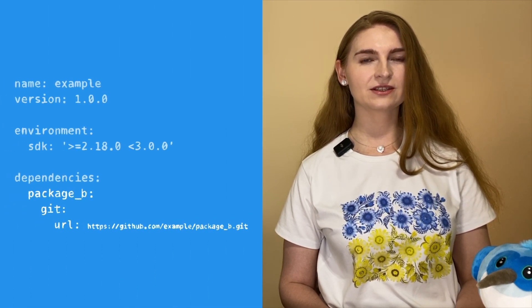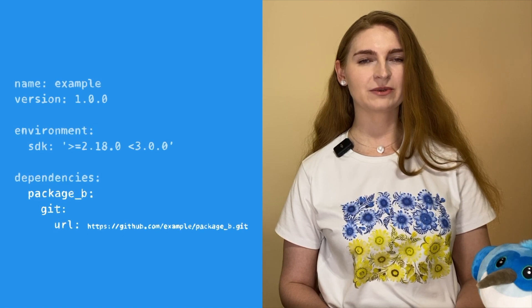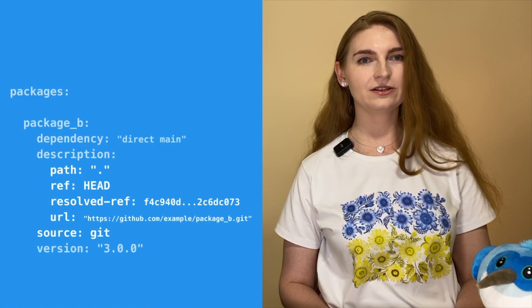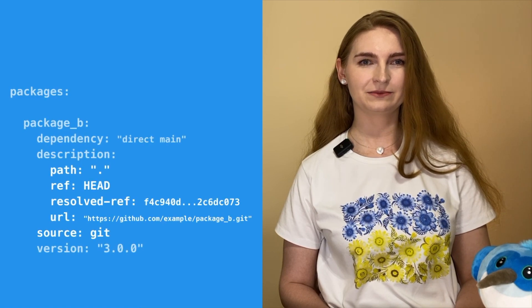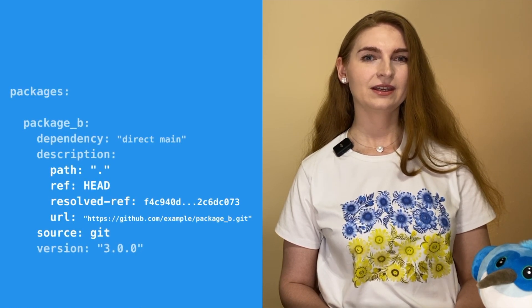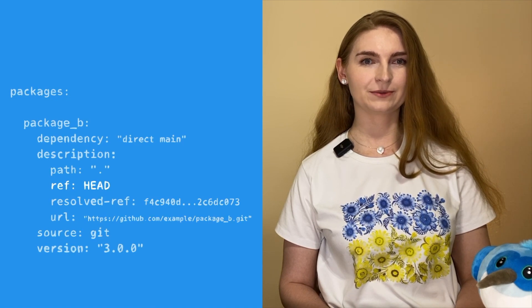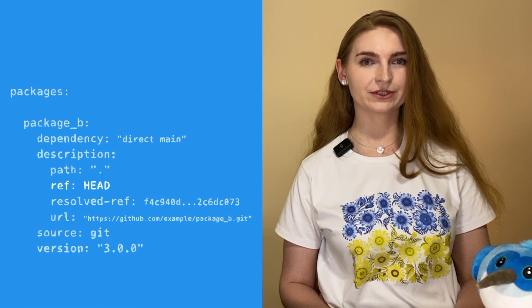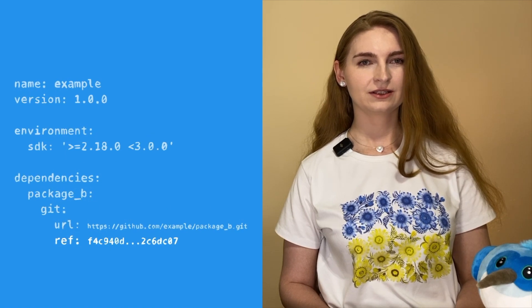Using Git solves the reusability problem — it allows depending on the same package from multiple projects. Pushing the new package to a Git repository also ensures only those who have access to the repository can use this package as a dependency. Here are the changes needed in the pubspec.yml file, and here is how the pubspec.lock file is updated. Notice that the lock file has a ref property — it is extremely important. You may specify a hash, a tag, or a branch name in the pubspec.yml file.